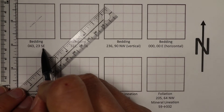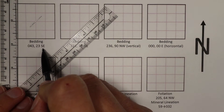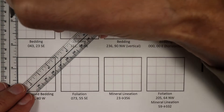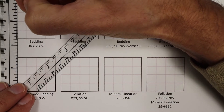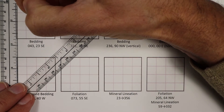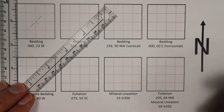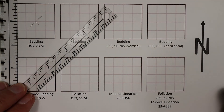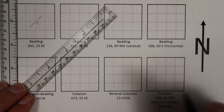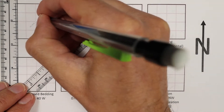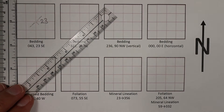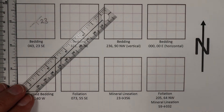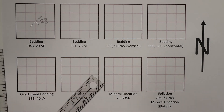We can see that the dip direction is southeast, so I'm going to put the short line — which is always perpendicular to the strike line — right there. Then we just put the dip of 23 somewhere near the strike and dip symbol. There it is complete.